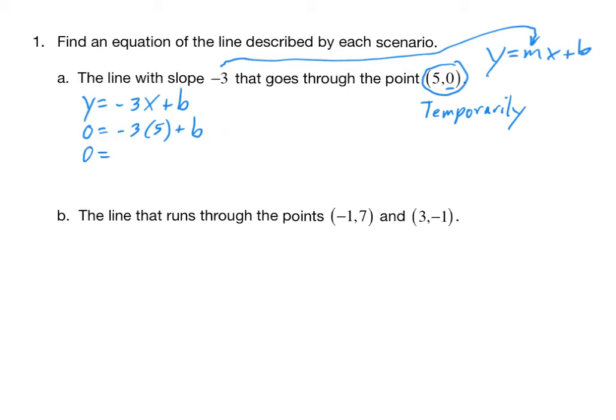So we can solve for b. Of course, -3 times 5 is -15, plus b. And then to isolate b, you'd add 15 to both sides, and 0 plus 15 is 15. So now, we've got the m value, the slope is -3, and now we know that the b value is 15.